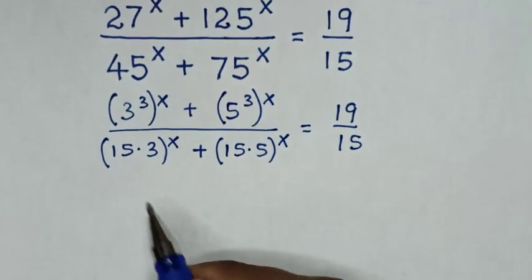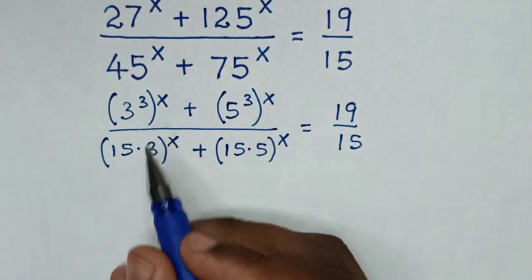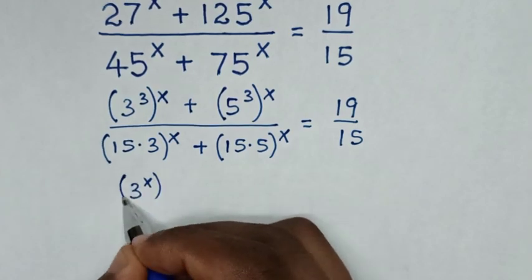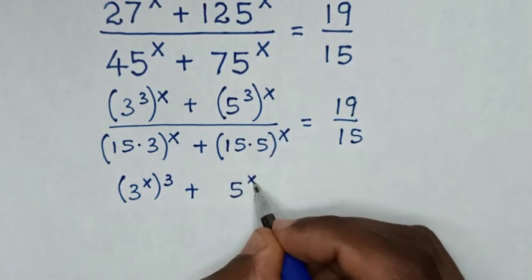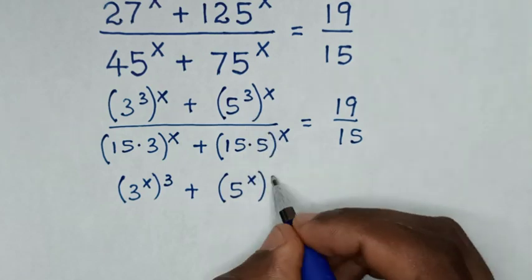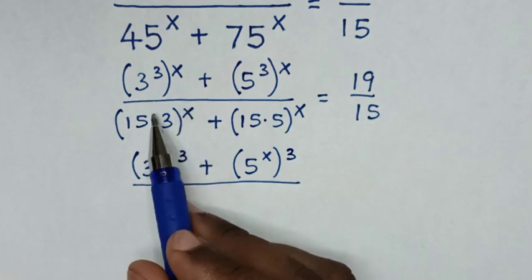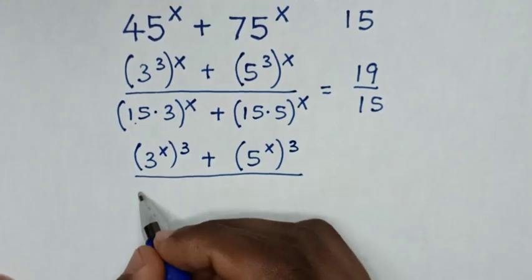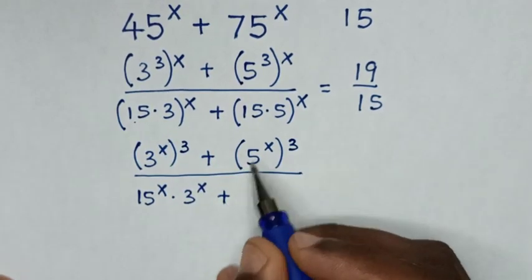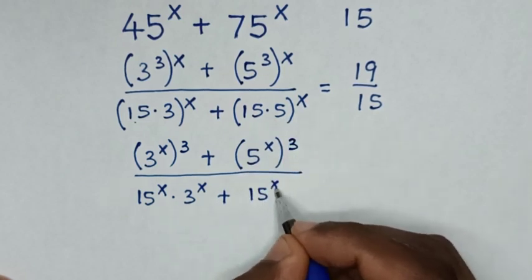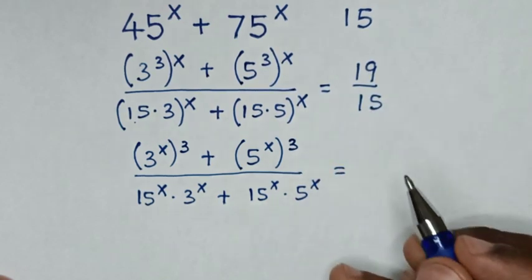In the next step, we take the power of x inside the bracket and the power of 3 outside the bracket. So it becomes 3^x to the power of 3, plus 5^x to the power of 3, over — in the denominator, we take the power of x inside the bracket — 15^x times 3^x plus 15^x times 5^x, equals 19 over 15.